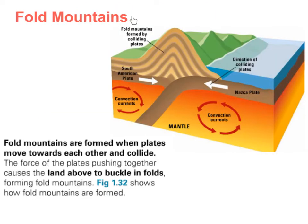Fold mountains are formed when plates move towards each other and collide. The force of the plates pushing together causes the land above to buckle in folds, forming fold mountains. Figure 1.32 shows how fold mountains are formed.